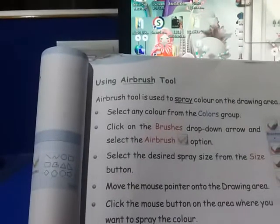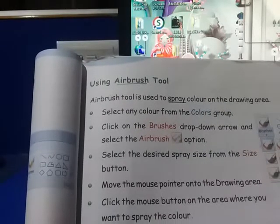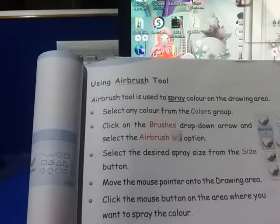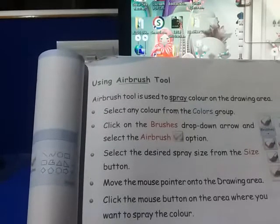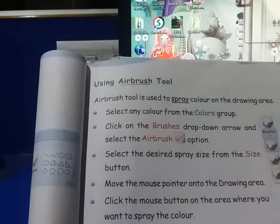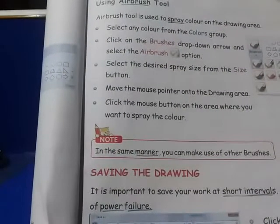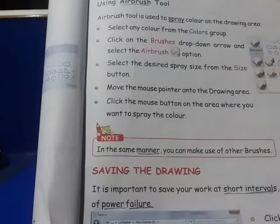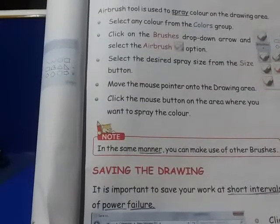Then move the mouse pointer to the drawing area. Click the mouse button on the drawing area where you want to spray the color. Jo bhi drawing area mein, aap jaisi pointer le ke aayenge, jis bhi area mein aap ko color spray karna hai, aap click kar dijiye. In the same manner, you can make use of other brushes. Abhi airbrush tool aur brush tool — jaisi hame ne dono cheez sikhaya, waisa hi aap baaki jo left out hain sab ko use kar sakte hain.